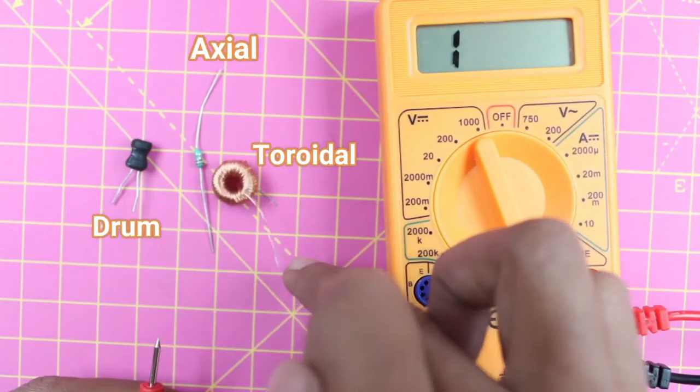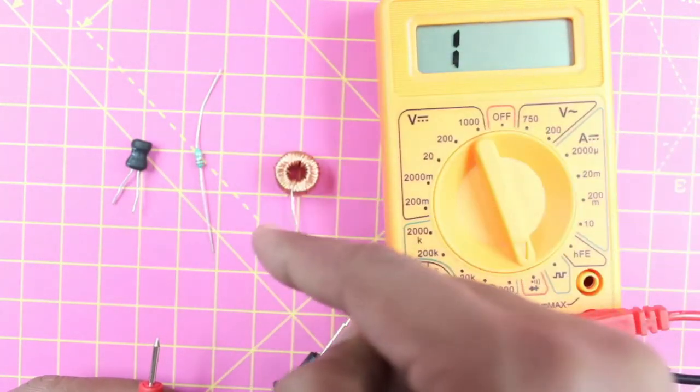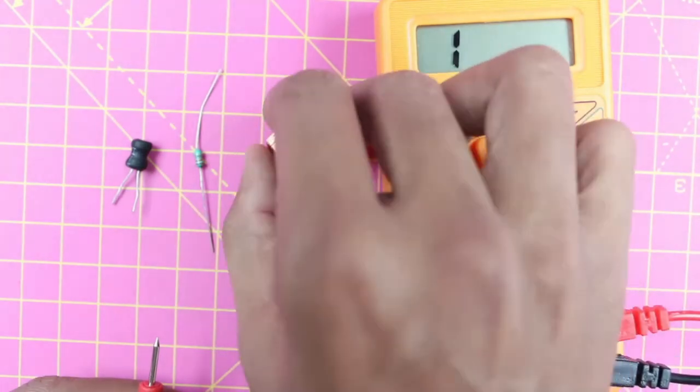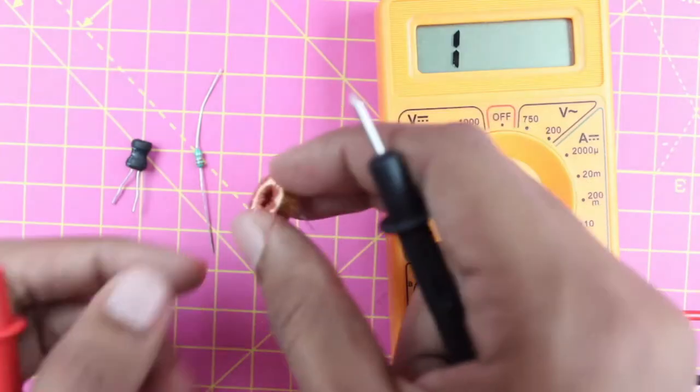Let's start with the toroidal inductor. An inductor is nothing but a coil wound and connected at two terminals, so if you get continuity between these two terminals it means that the inductor is working.